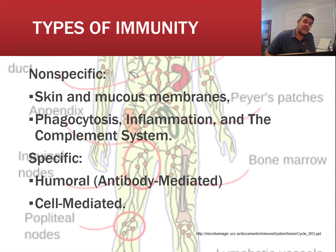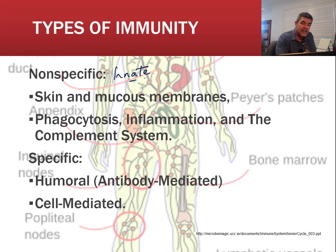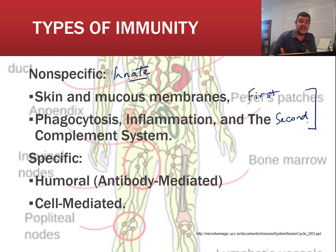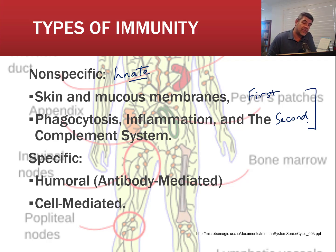We want to review what we already know about immunity and then extend on it. We know that we have non-specific immunity, which is the same as innate immunity, and it involves both the first and second lines of defense against disease. This includes the skin and mucous membranes as physical and chemical barriers, phagocytosis by white blood cells, inflammation, fever, and the complement system — all innate and non-specific responses.